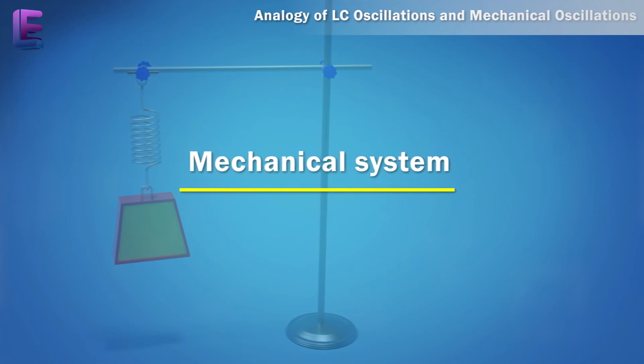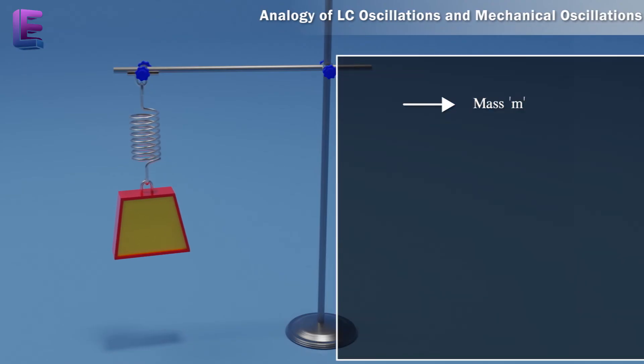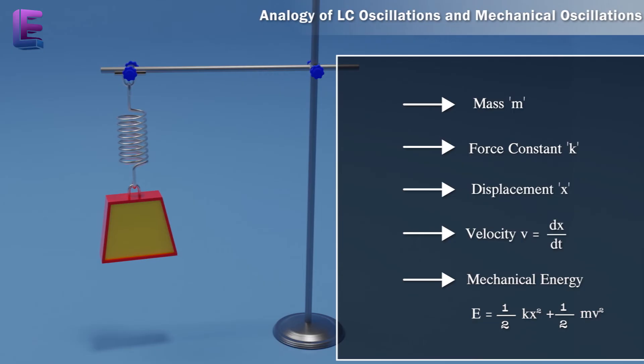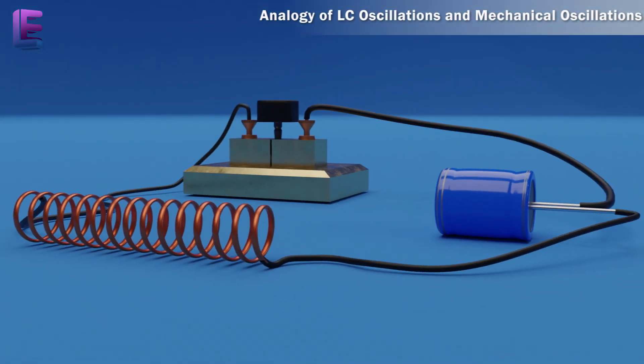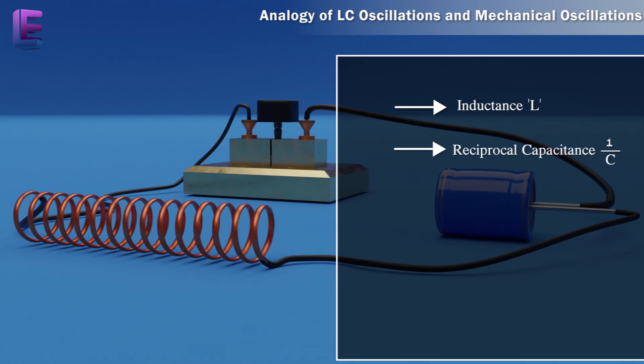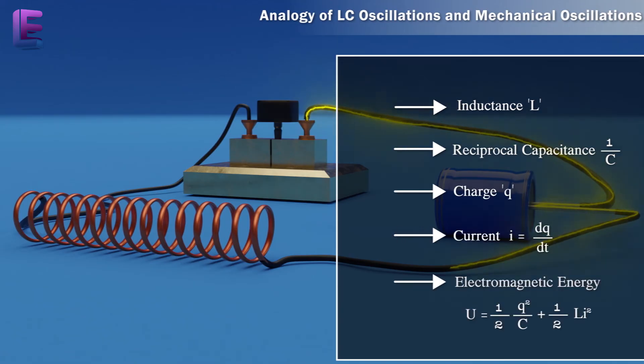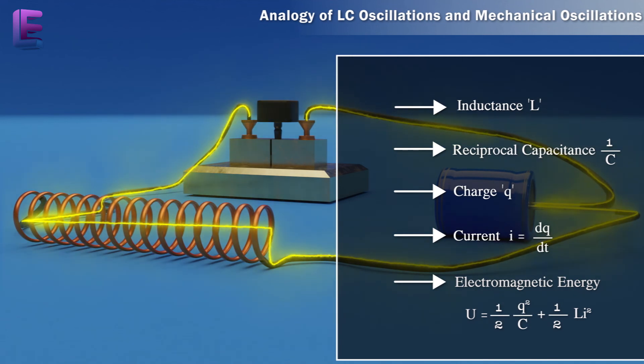Mechanical system: Mass m, Force constant k, Displacement x, Speed or velocity v equals dx by dt, Mechanical energy E equals 1 by 2 kx square plus 1 by 2 mv square. LC oscillation system: Inductance L, Reciprocal capacitance 1 by c, Charge q, Current i equals dq by dt, Electromagnetic energy U equals 1 by 2 q square by c plus 1 by 2 L i square.